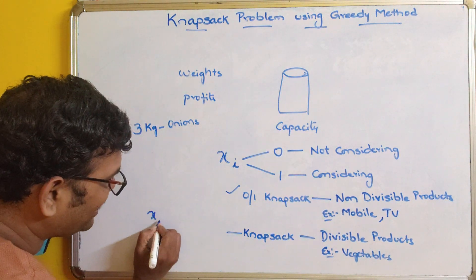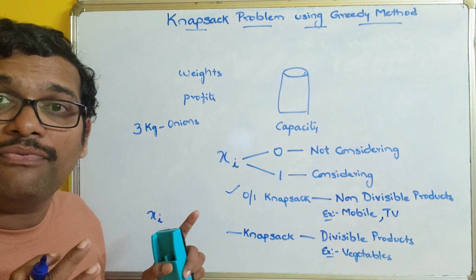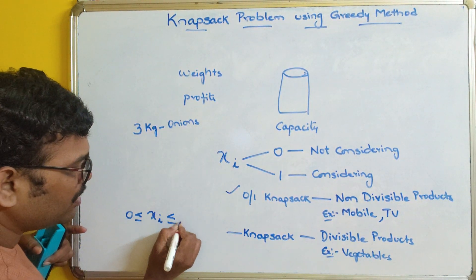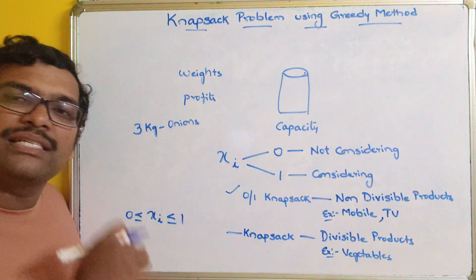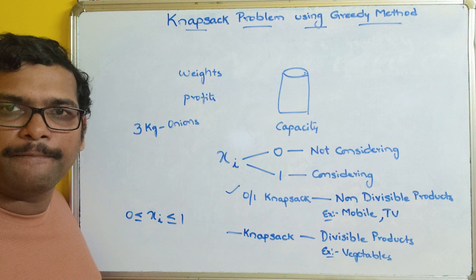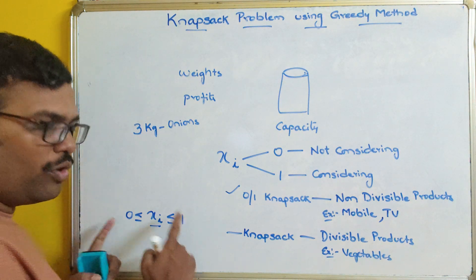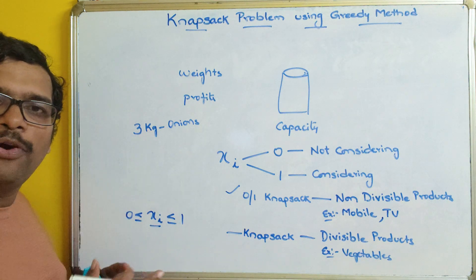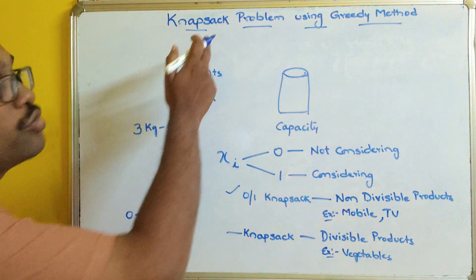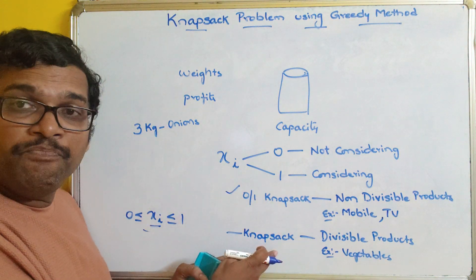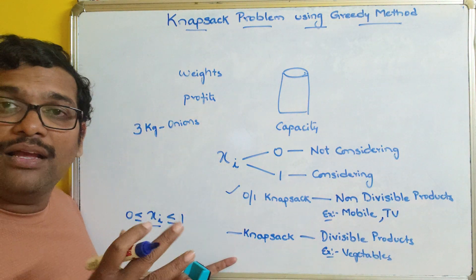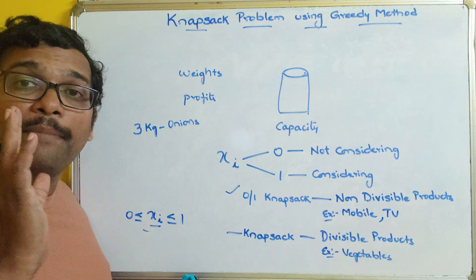Here the status xi gives the status of a weight — whether it is considered or not. This can be in between 0 and 1. So 0 means completely not accepting, 1 means the full weight is accepted, and a value in between 0 and 1 means some portion of the weight is accepted. So in this knapsack problem, xi will be between 0 and 1. There is a slight difference between zero-one knapsack and the knapsack: zero-one knapsack does not accept fractional weights, but the knapsack problem allows fractional weights — it allows a part of the weights.